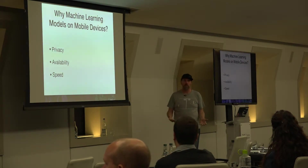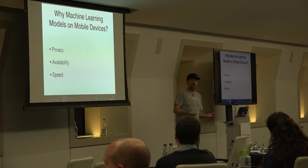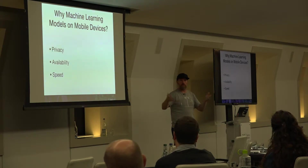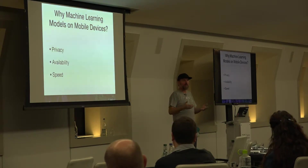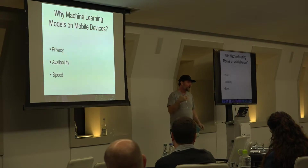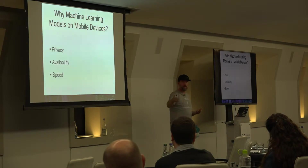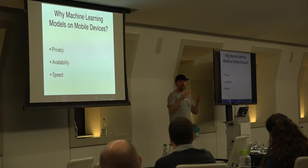The question is: why should I do this? I have a big server farm, I could set everything up and I already have my machine learning model. The first reason is privacy — you don't have to send data over the internet, like an image or something; it can stay on the mobile phone.